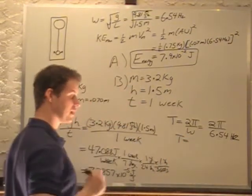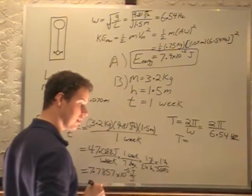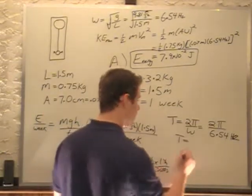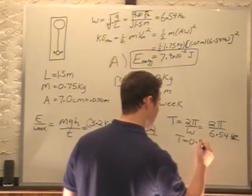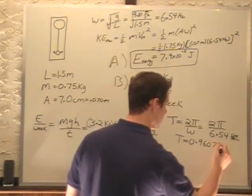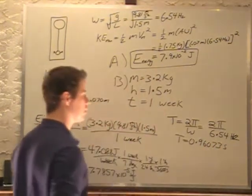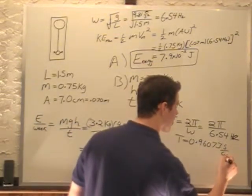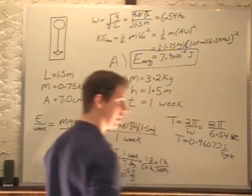Which is going to give us a period. One oscillation, one cycle happens every 0.9603 seconds. So seconds per cycle is what it is.